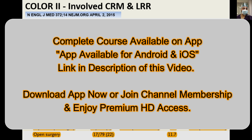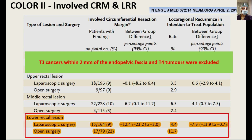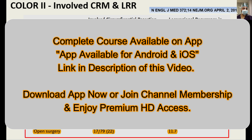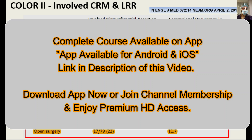This again re-emphasizes the point that we are not able to give proper surgery, or we are not dissecting adequately to achieve a negative CRM. We are persisting too low and too long, getting closer to the tumor and giving a positive margin to the patient. It is important to analyze this data with a hawk's eye — reading between the lines to get a proper inference. An important finding in the paper is that T3 cancers within 2mm of the endopelvic fascia and all T4 tumors were also excluded from the analysis.